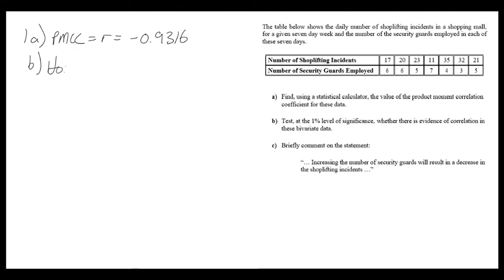In part B we're asked to conduct a hypothesis test at the 1% significance level to check whether there's evidence of correlation in the data. It doesn't specify whether we're looking for positive or negative correlation, so we're going to conduct a two-tailed test. The null hypothesis is rho equals zero and the alternative is rho not equal to zero.